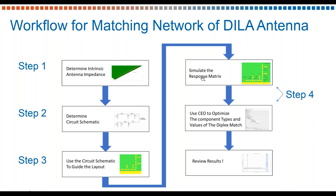Then we are going to move over to the response matrix. The component values in our schematic editor won't work once we have the physical layout due to the parasitics from the topology of the matching network. To resolve this, we will run a multiport response matrix on the antenna and the matching network. From there, we'll use our circuit element optimizer at the end of step four to optimize the values of our components so we can meet the goals we set for the antenna system, taking into account the parasitics from the topology. Once we have done this, we can then view our results.